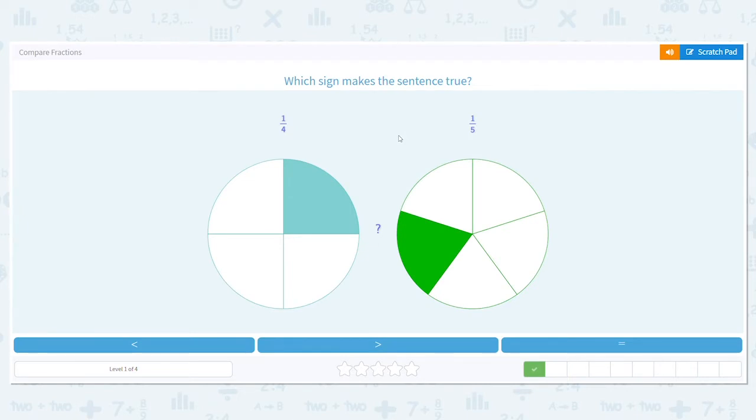Let's look at this one. Which sign makes the sentence true? I have one-fourth and one-fifth. Is it less than, greater than, or equal to? Now, just looking at the pictures, they look kind of similar, but we have to do more than that. We can't just go, oh, it kind of looks similar. We actually have to do some work. And I have a nice little shortcut for comparing fractions when the numerator is the same.